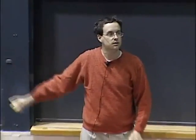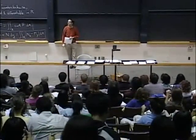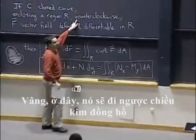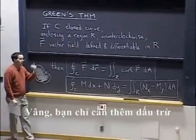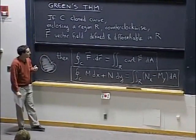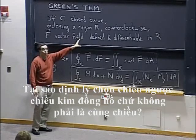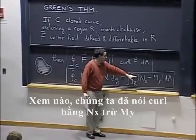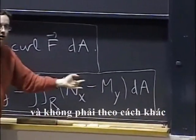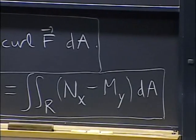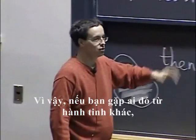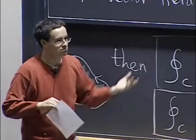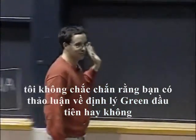Any questions about the statement? One remark: the theorem specifies counterclockwise. What if I have a curve that goes clockwise? You could just take the negative and integrate counterclockwise. The reason the theorem chooses counterclockwise is essentially our convention for curl — we defined curl as N sub x minus M sub y and not the other way around. That's a convention, and the two conventions match each other. If you met somebody from a different planet, they might have a Green's theorem with the opposite conventions, with curves going clockwise.